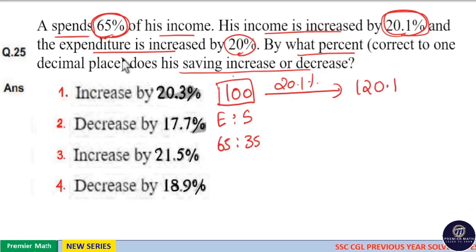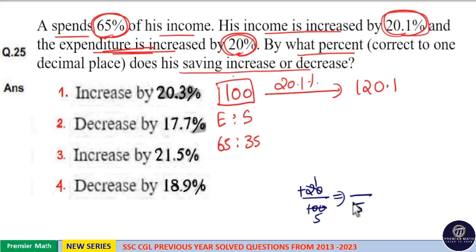Now, expenditure also increased by 20%, which means 20% is the increment. Increment means plus. So, 20 by 100 means 1 by 5. So, plus 1 by 5 means if 5 parts is the initial expenditure, 5 plus 1, 6 parts is the new expenditure.